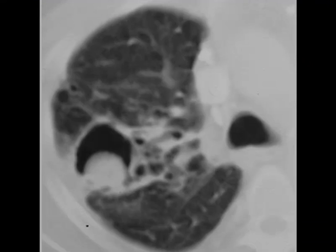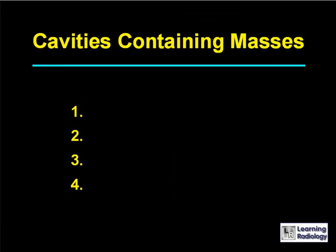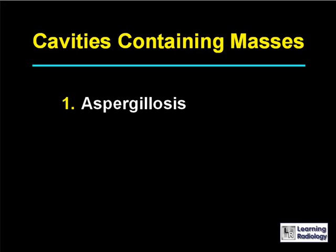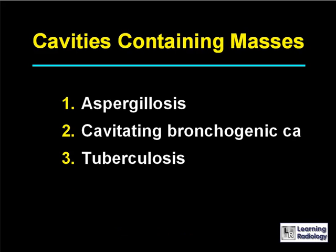Here's the next differential. The differential is cavities containing masses. There are four causes. The four causes of cavities containing masses are aspergillomas, cavitating bronchogenic carcinomas, tuberculosis, and hydatid cysts.